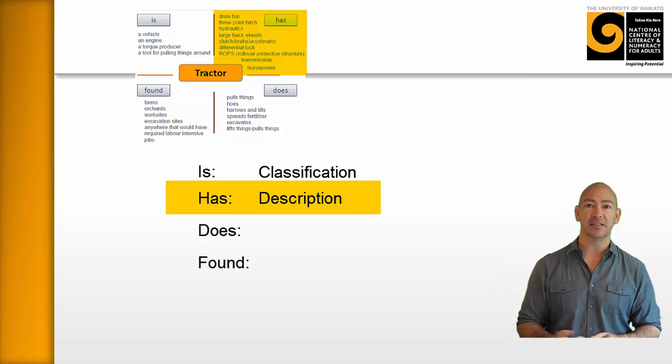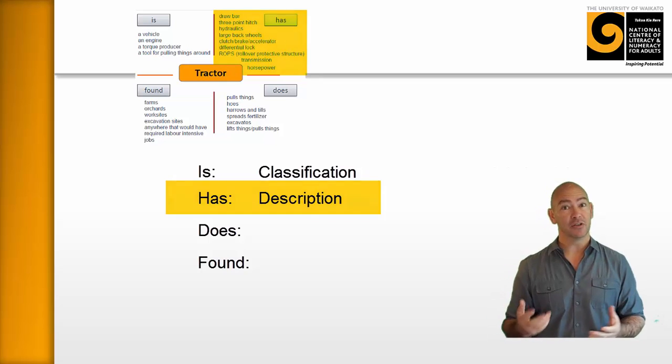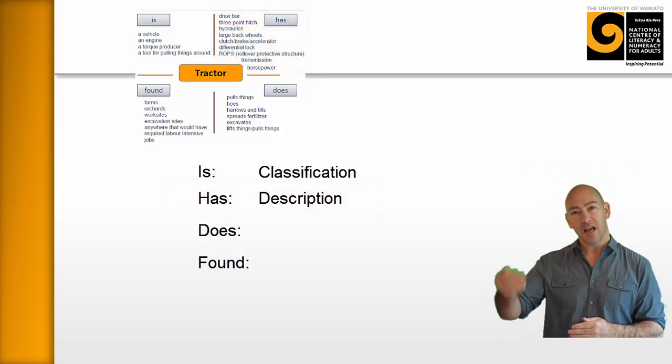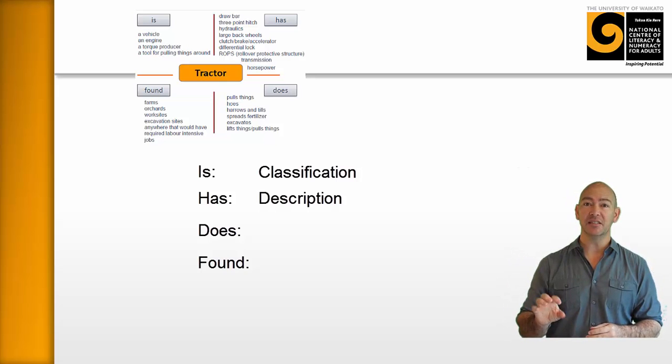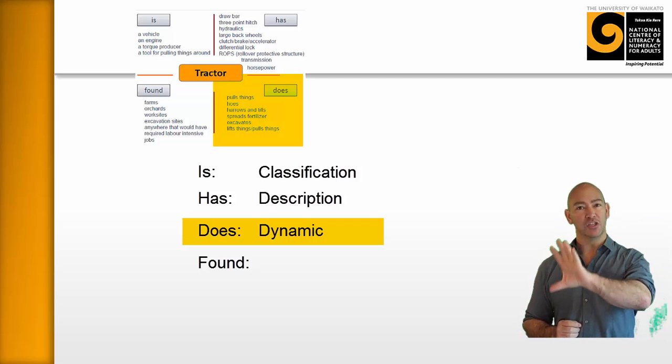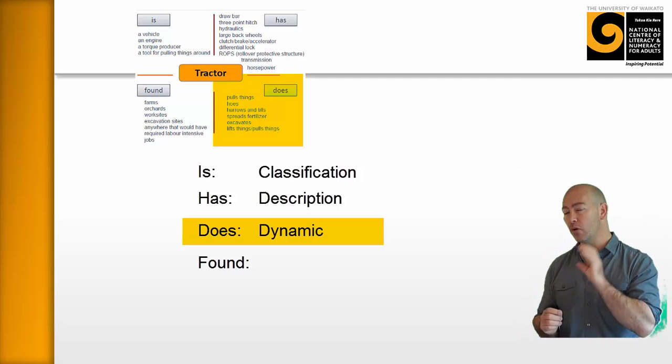A tractor has big wheels, small wheels, and so on and so on. Three points. All of those things. So we're describing it. And then we move down to does. Does is a dynamic. That is, what does it do? We've classified it. We're describing its features. And now we're talking about what it does.